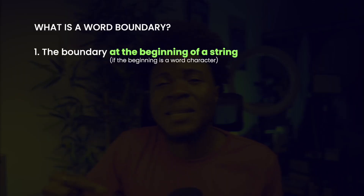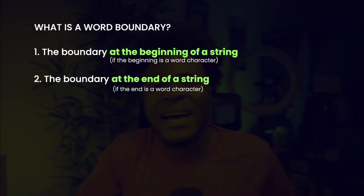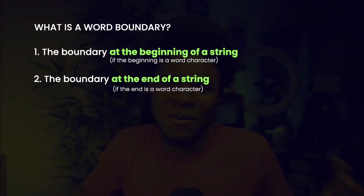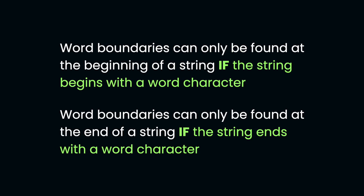A word boundary can be four things. The first is the boundary at the beginning of your string. The second is the boundary at the end of your string. Note that for a word boundary to exist at the beginning of your string, the string has to begin with a word character, and similarly, the end of the string also has to be a word character.